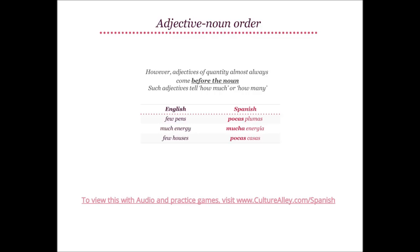However, adjectives of quantity almost always come before the noun — such adjectives tell how much or how many. Few pens will be pocas plumas, where few is pocas and will come before the noun plumas. Much energy becomes mucha energía, where much is mucha. Few houses is pocas casas. All adjectives of quantity come before the noun, unlike descriptive adjectives which come after.